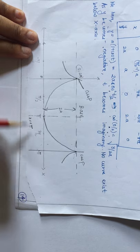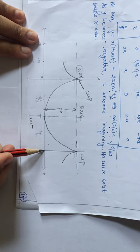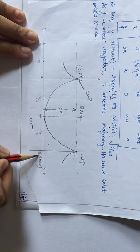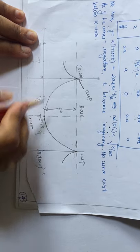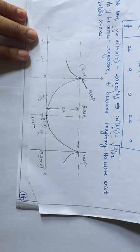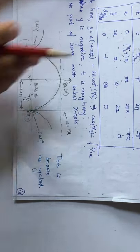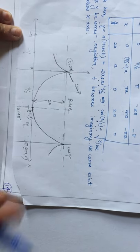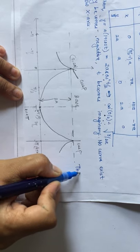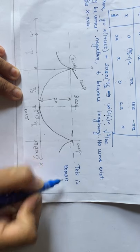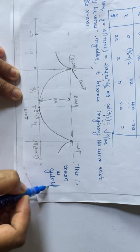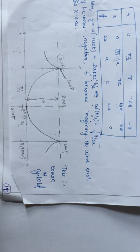Key points: (0, 2a) is the starting cusp, (πa, 0) is the bottom point with a vertical tangent, and (2πa, 0) is the next cusp. This is another form of a cycloid, but here the base line is y = 2a, whereas in the previous example the base was the x-axis.